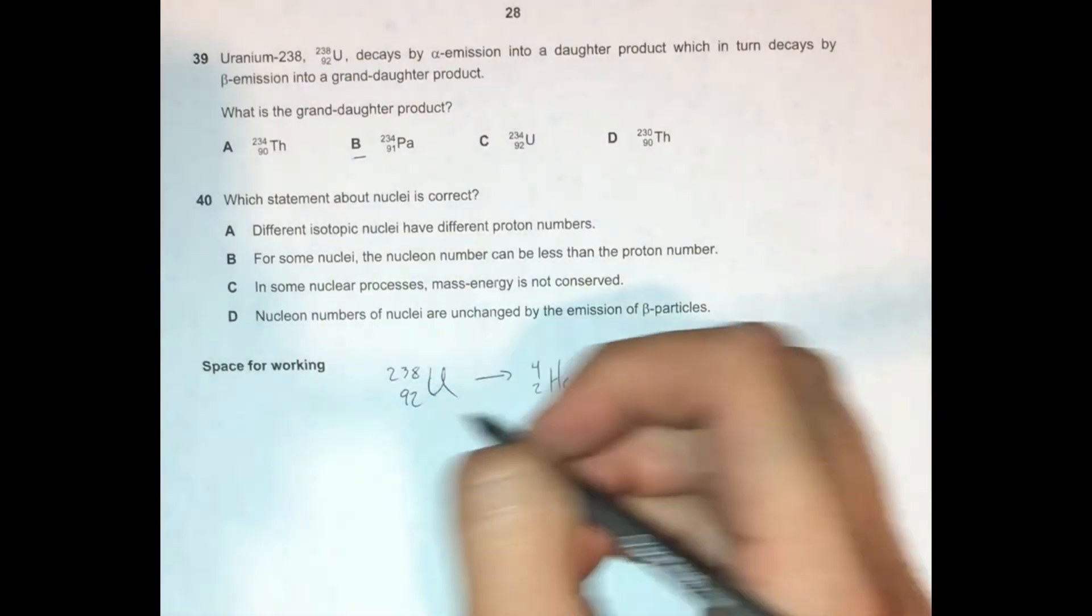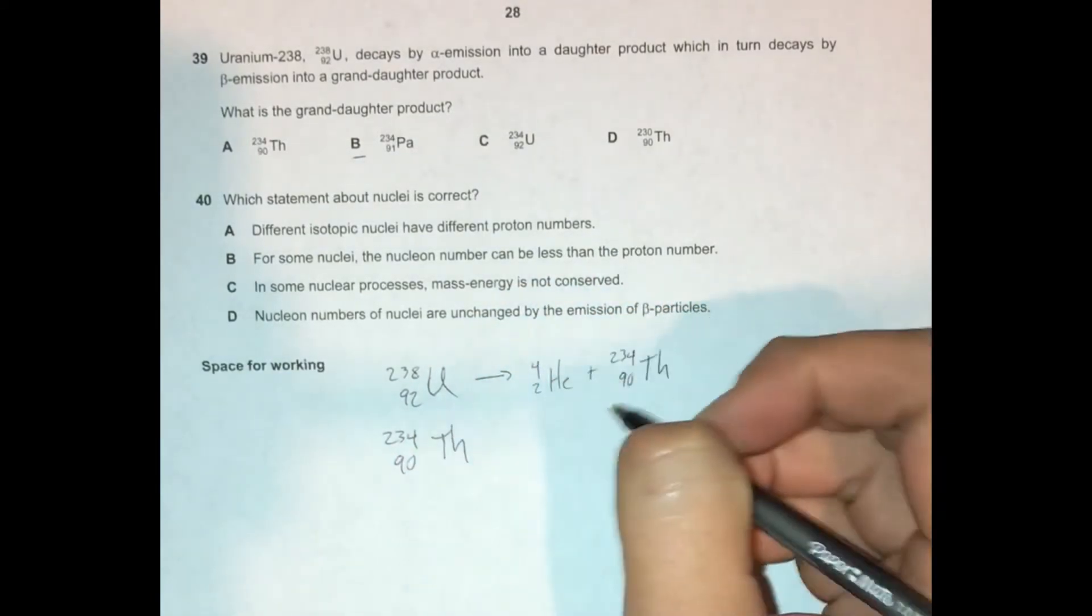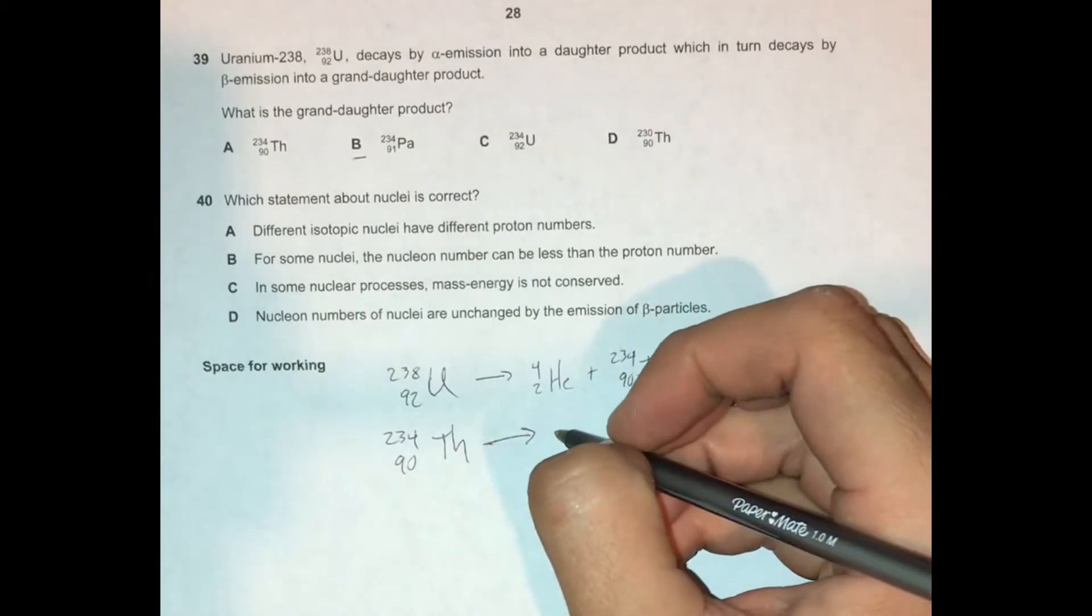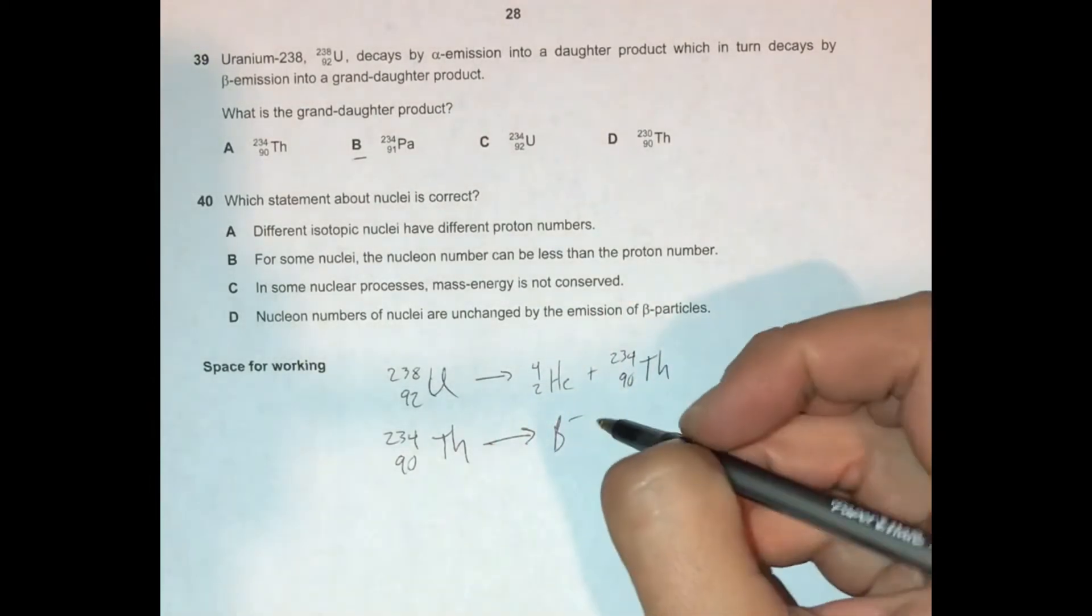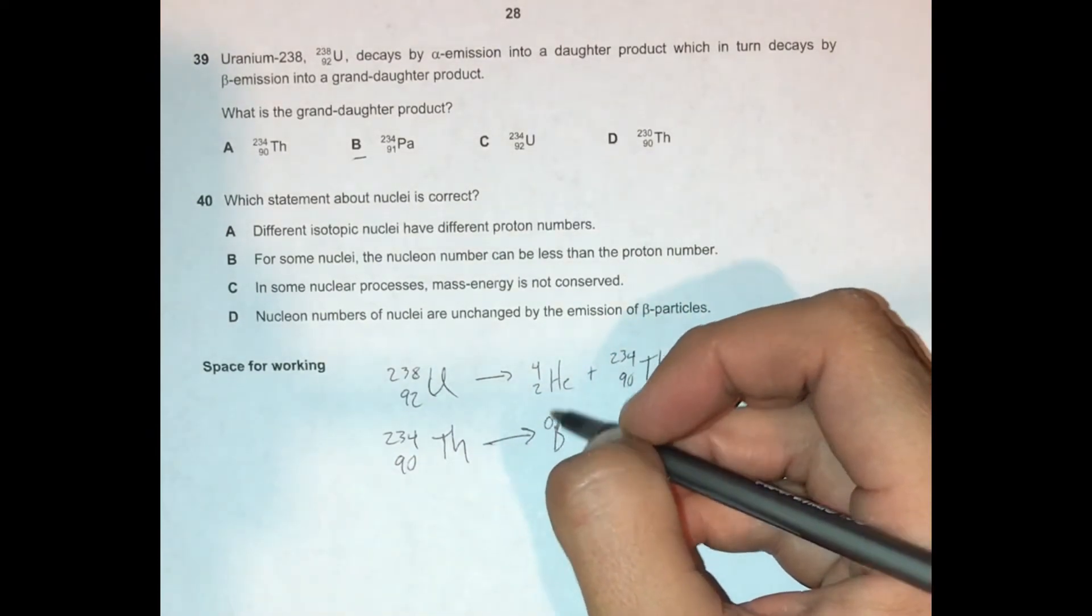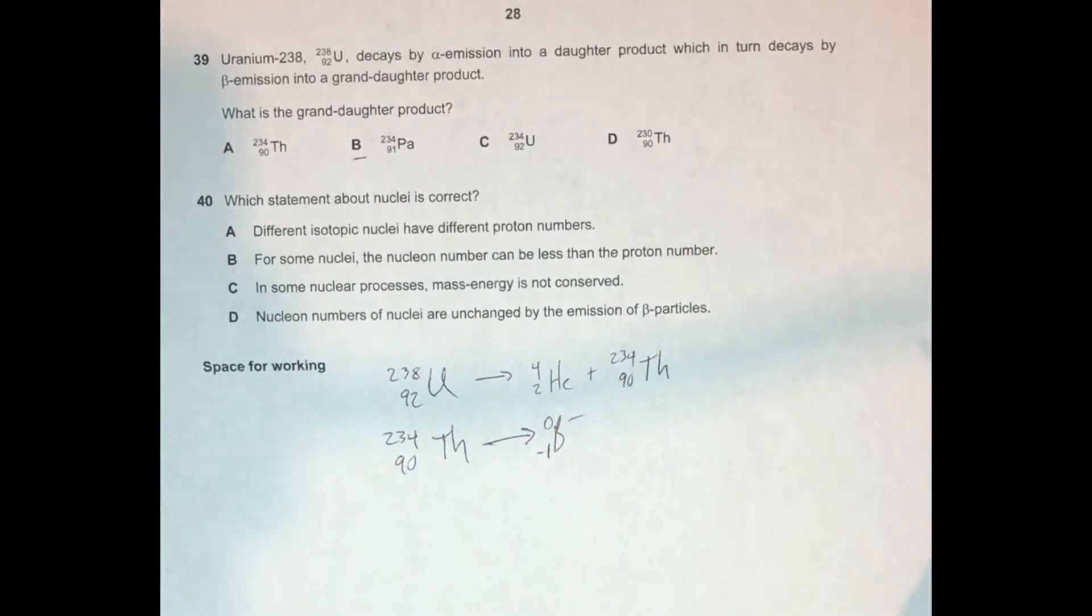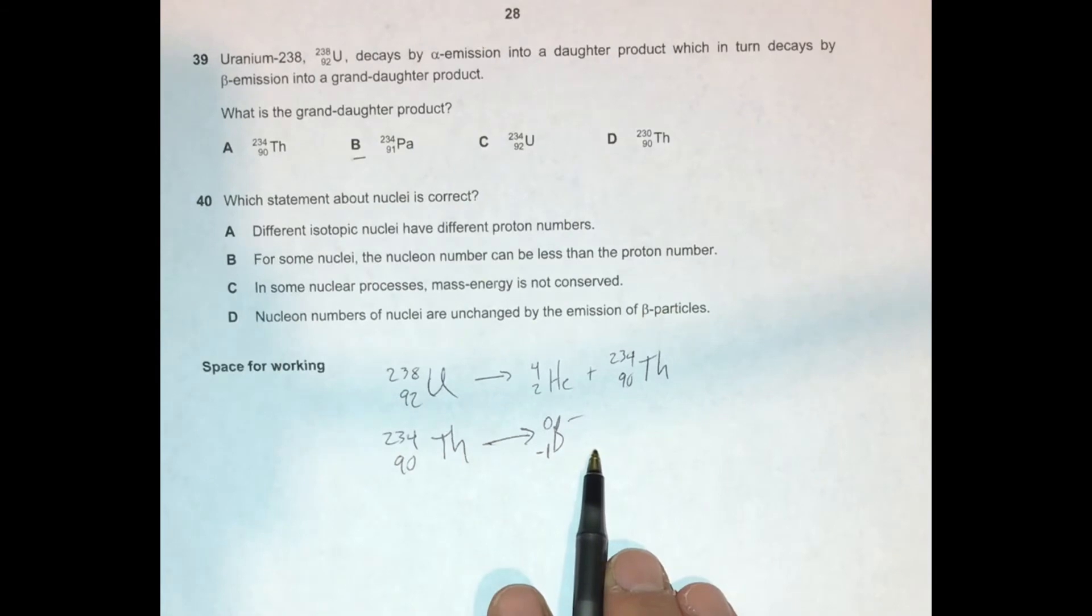But then that thorium is going to emit a beta particle. Now, a beta particle is not a nucleon, so it has no nucleon number. And its proton number - well, it's an electron. So we can kind of think about it, its charge is negative one. And so we need to make sure that this all remains balanced here.